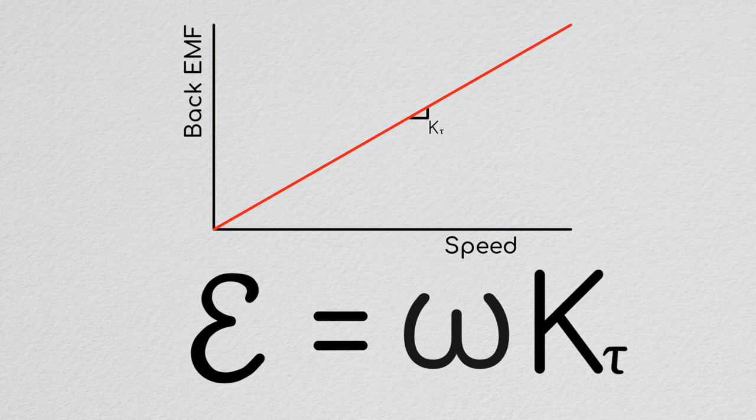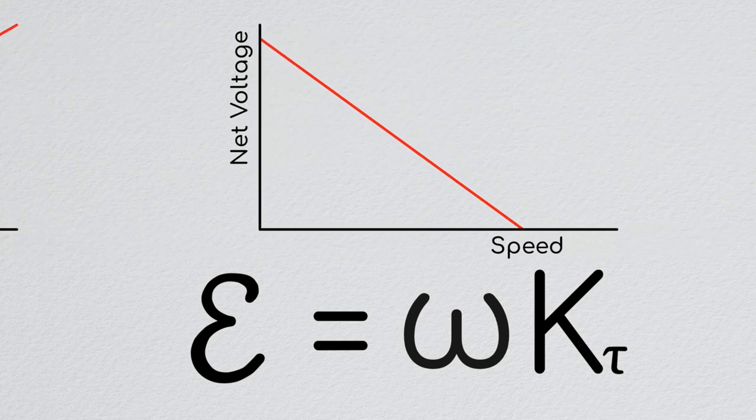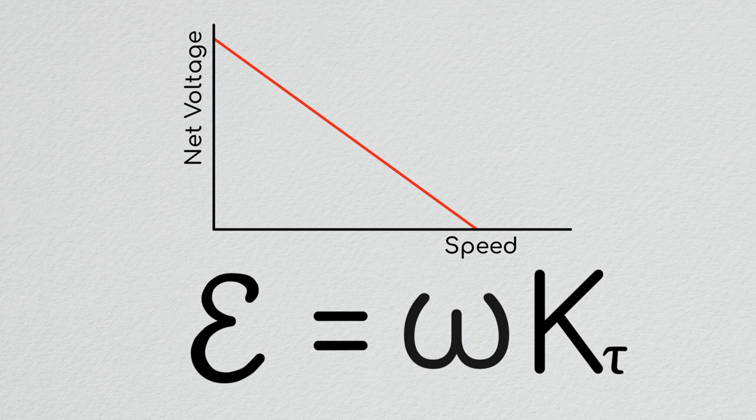Because the back EMF is in the opposite direction of the supply voltage, as the motor turns faster the net voltage across the resistive element drops, thus decreasing our current.